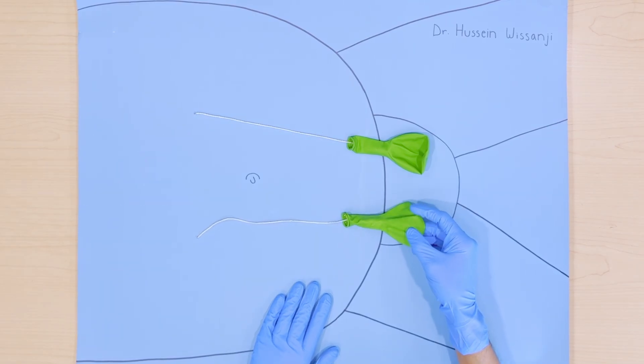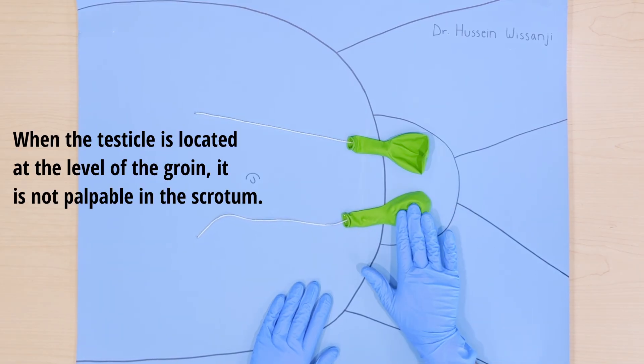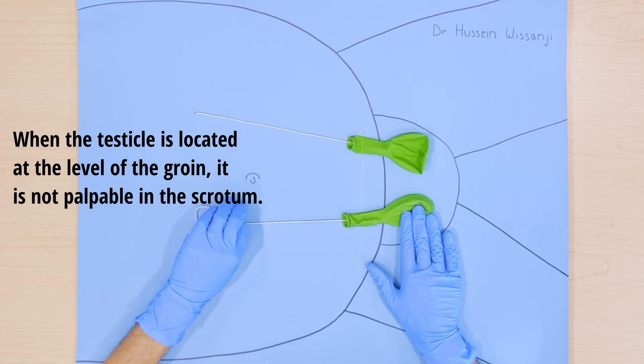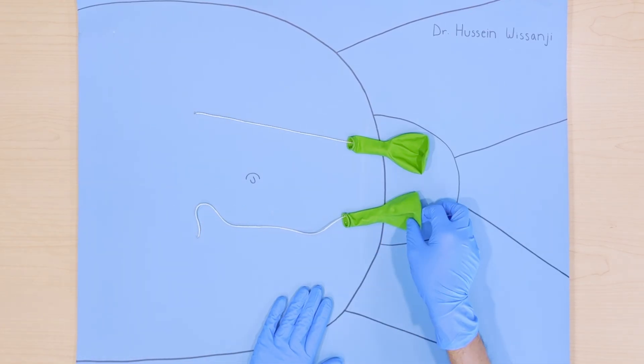If the testicle cannot be palpated in the scrotum, it might be in the inguinal canal. In that case, you won't be able to palpate the testicle in the scrotum.